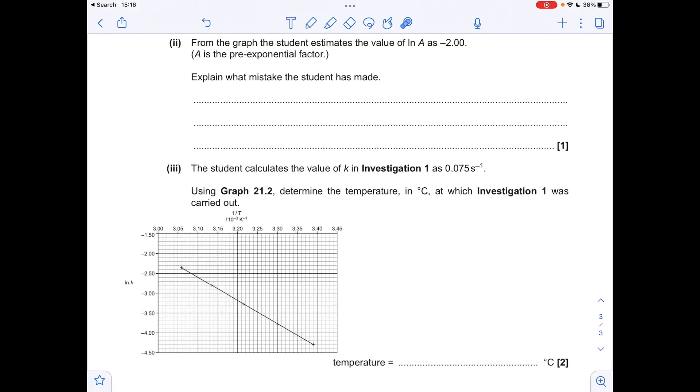So moving on to the next part, you'll notice I've copied the graph, just to save me going backwards and forwards. So the student has made a mistake by estimating the value of ln A at minus 2. So they've obviously extrapolated back and got to that minus 2. What's the problem with doing that? It's down to the fact that the x-axis does not start at 0.